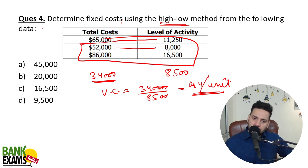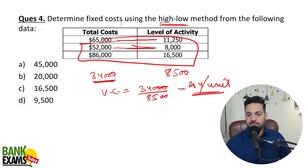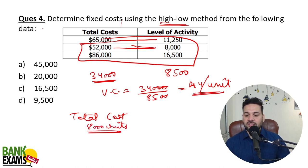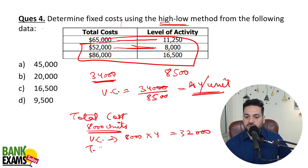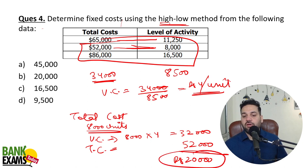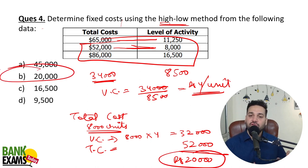Now you have the total cost and the variable cost, so it is very easy to calculate the fixed cost. For 8,000 units, total cost is 52,000. Variable cost is 8,000 multiplied by 4 = 32,000. Total cost equals variable cost plus fixed cost, so 52,000 minus 32,000 = 20,000. Rupees 20,000 is your fixed cost — option B is the correct answer.